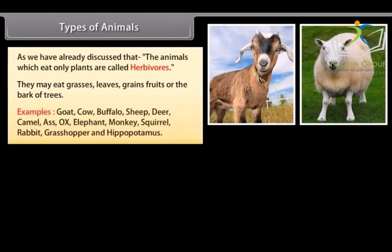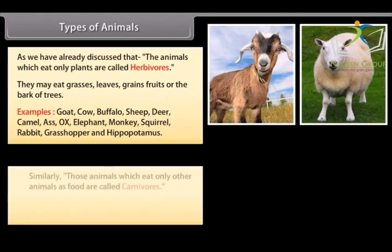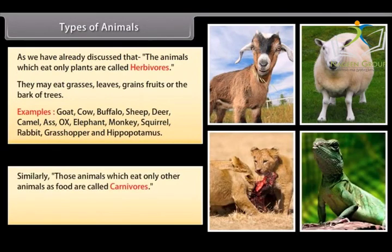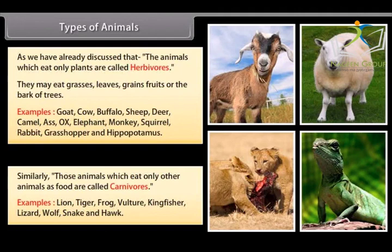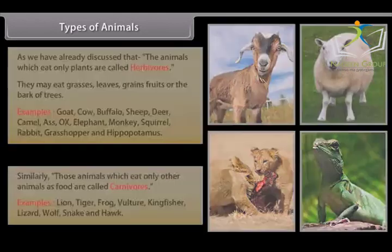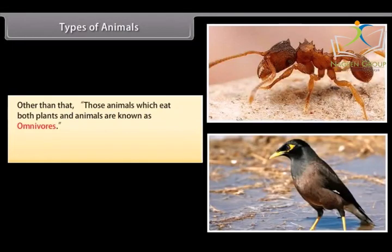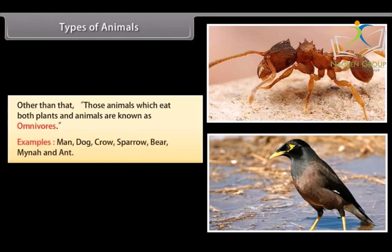Examples of herbivores include: goat, cow, buffalo, sheep, deer, camel, ass, ox, elephant, monkey, squirrel, rabbit, grasshopper, and hippopotamus. Animals which eat only other animals are called carnivores; examples include lion, tiger, frog, vulture, kingfisher, lizard, wolf, snake, and hawk. Animals which eat both plants and animals are known as omnivores; examples include man, dog, crow, sparrow, bear, myna, and ant.